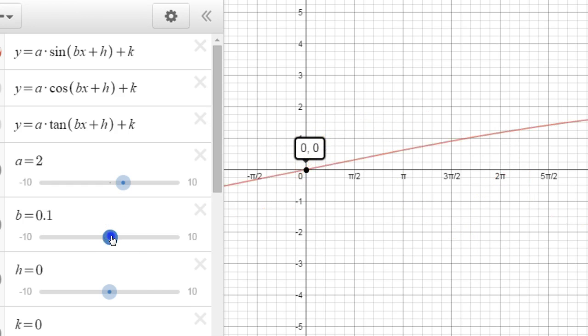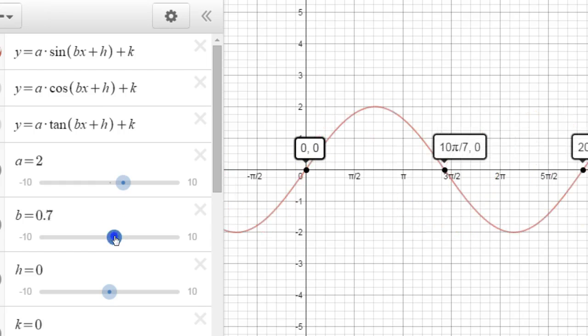Now if we make B smaller, obviously it's going to stretch it out. So you could call the B number the vertical compression that we're used to.